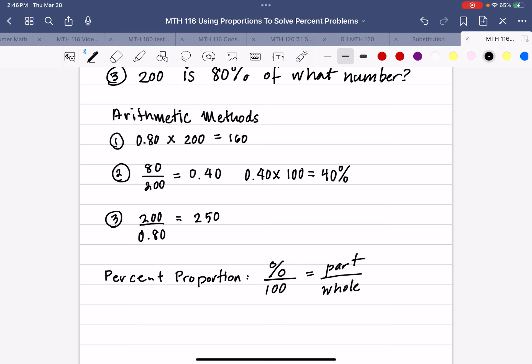Now, to identify the part and the whole, you're going to look for the word is, and sometimes you'll see the word was if it's past tense, and here it's going to be the number after of.